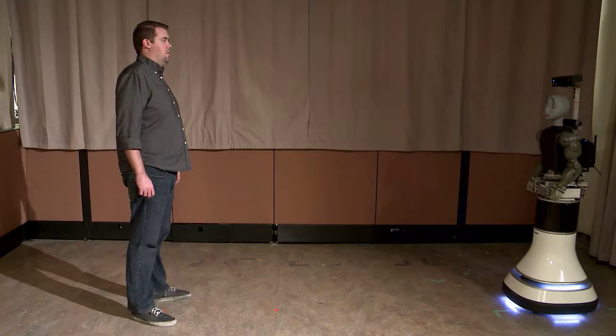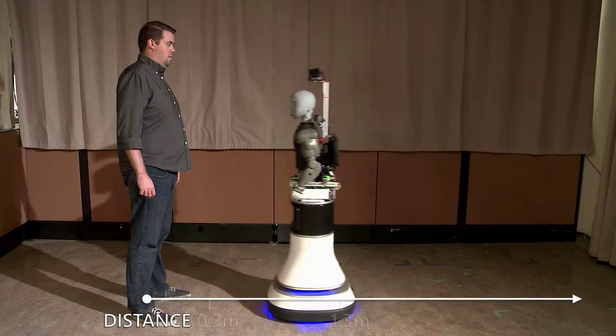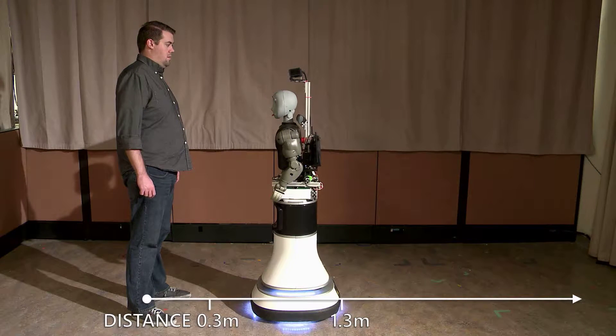Many studies in human-robot proxemics have shown that people tend to stand closer to robots than to other people, between 0.3 meters and 1.3 meters.